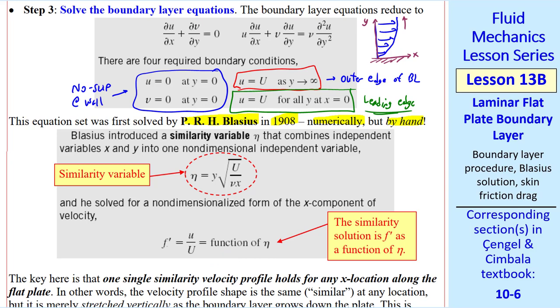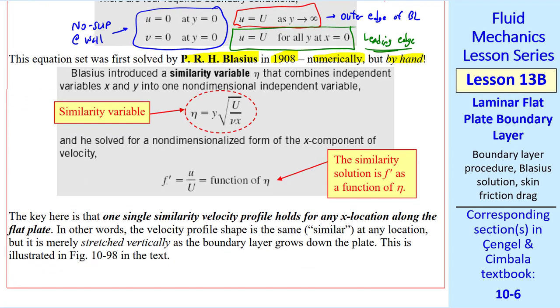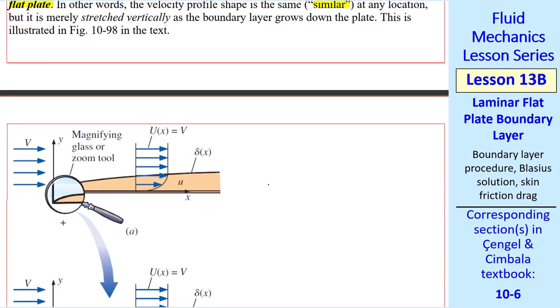I teach a detailed solution of this in my graduate fluids class. Here we'll just accept the solution. The key is that one single similarity velocity profile holds for any X location along the flat plate. In other words, the velocity profile shape is similar or the same at any location. It's merely stretched vertically as the boundary layer grows. I illustrate this in the next figure.